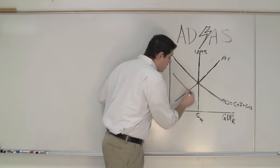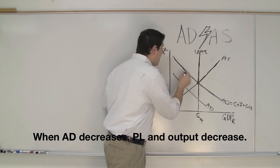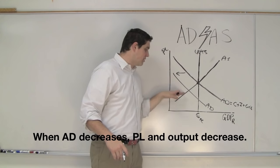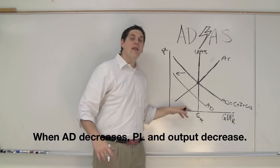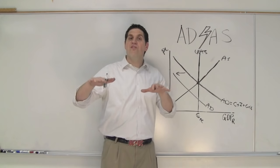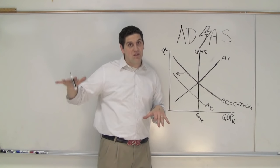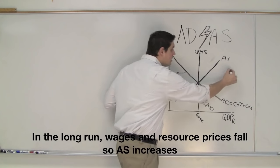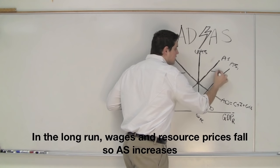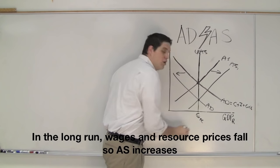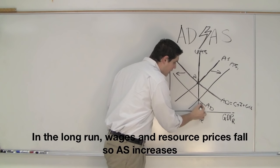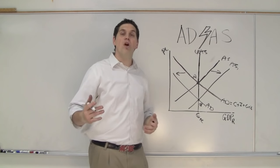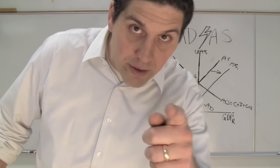It also goes the other direction. Let's say we're in a recessionary gap — aggregate demand falls, putting downward pressure on prices, decreasing price level and quantity. In theory, when the price level falls and wages are flexible, wages eventually fall too. If wages fall and resource prices fall, that would actually increase aggregate supply, shifting it to the right, leading to a new equilibrium. We started at A and ended at B on the long-run aggregate supply. That's why the long-run aggregate supply is vertical. Make sure you know aggregate demand, aggregate supply, and the long-run aggregate supply.